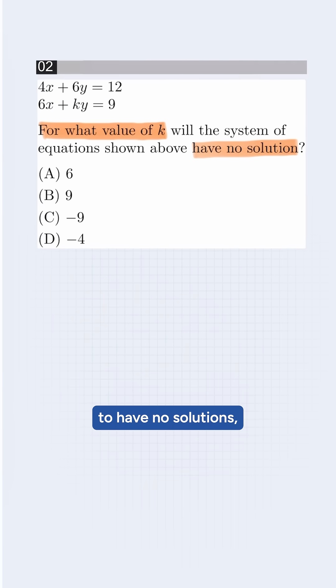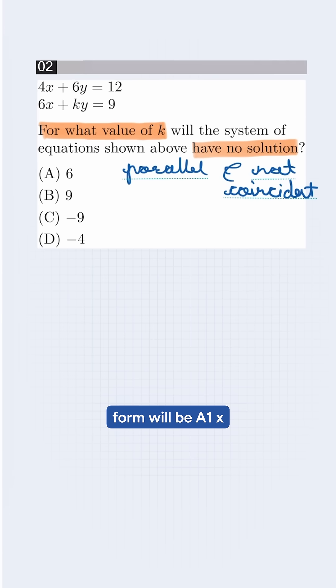To have no solutions, the equations will be parallel and not coincident. So linear equations in the standard form will be a1x plus b1y equals c1, and a2x plus b2y equals c2.